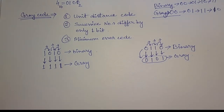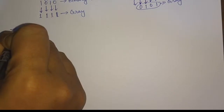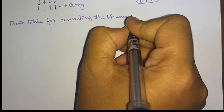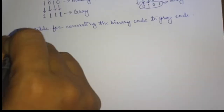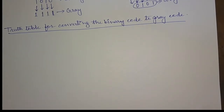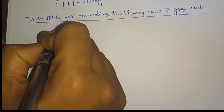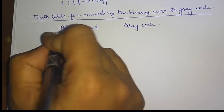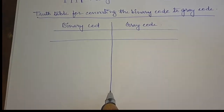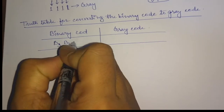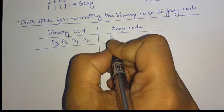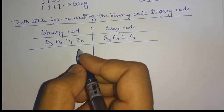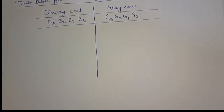Now for finding out the relation between the gray code and the binary code, let us make the truth table first — a truth table for converting binary code to gray code. We will write binary code on one side and gray code on the other. For a four-bit number: B3, B2, B1, B0 on the binary side, and Z3, Z2, Z1, Z0 on the gray code side.